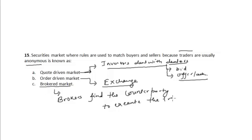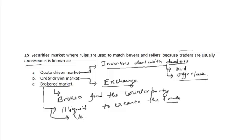This kind of brokered market is especially useful for unique and illiquid securities. So the correct option is option B — the order-driven market — where rules are used to match buyers and sellers because the traders are usually anonymous.